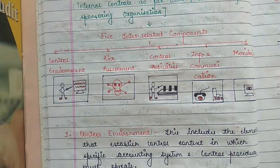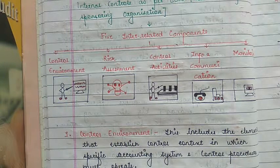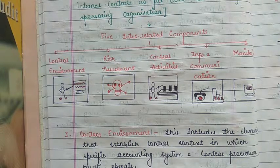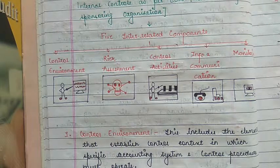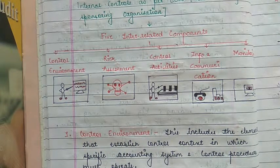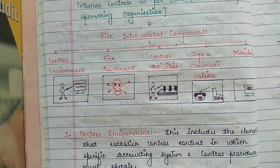Enterprise Governance was divided into two parts: Corporate Governance, also known as Conformance, and Business Governance, also known as Performance. Corporate Governance was the system in which the enterprise was directed and controlled to achieve the objectives of increasing shareholders' value by enhancing economic performance. Business Governance was proactive in its approach and had a forward-looking, business-oriented view, mainly focused on strategy and value creation with the objective of helping the board make strategic direction and decisions.